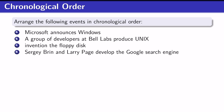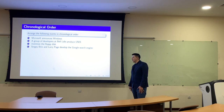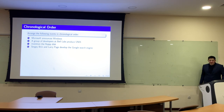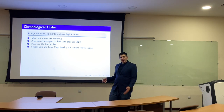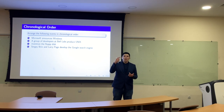Can you arrange the following events in chronological order: Microsoft announced Windows, developers at Bell produced Unix, invention of the floppy disk, or Page and Brin developed the Google search engine? I don't know the answer, so I'd like to guess. If I guess, what is the probability I get it correct? I need to know how many different possible orderings exist, then the probability is one over that number.